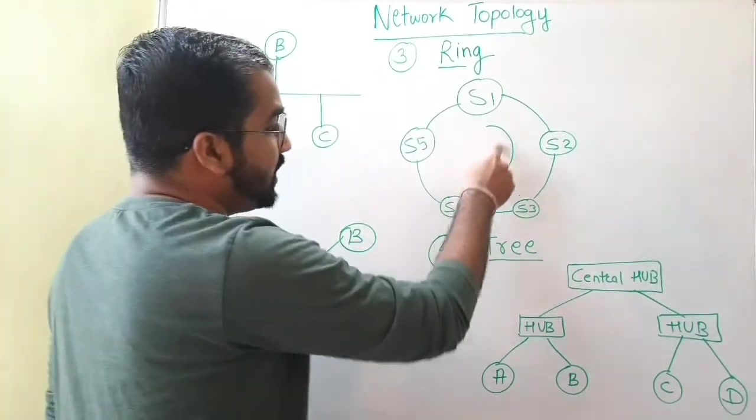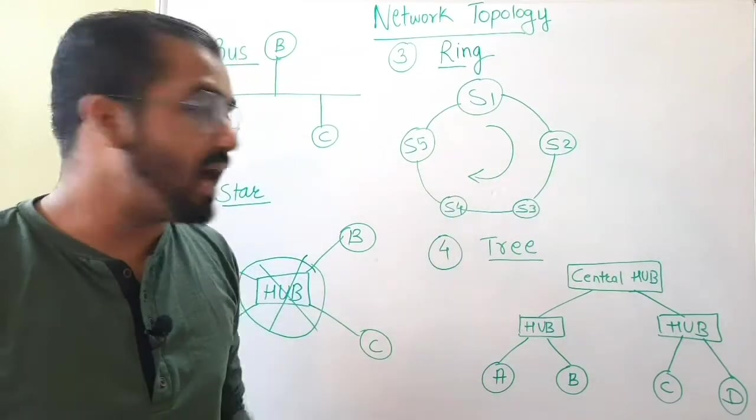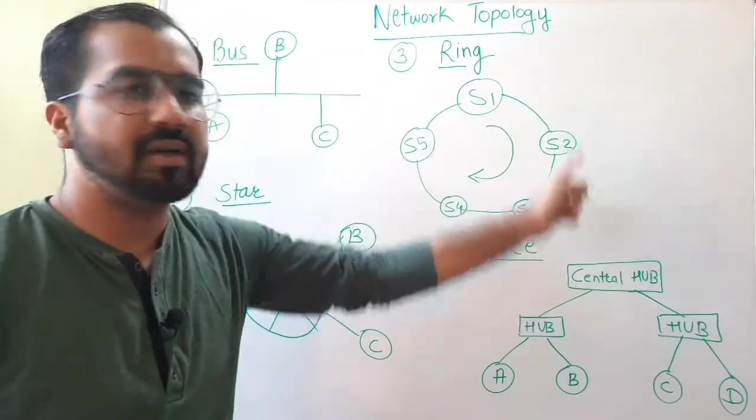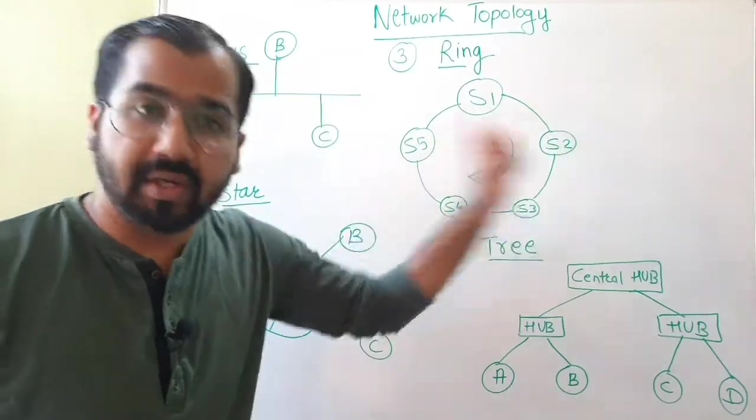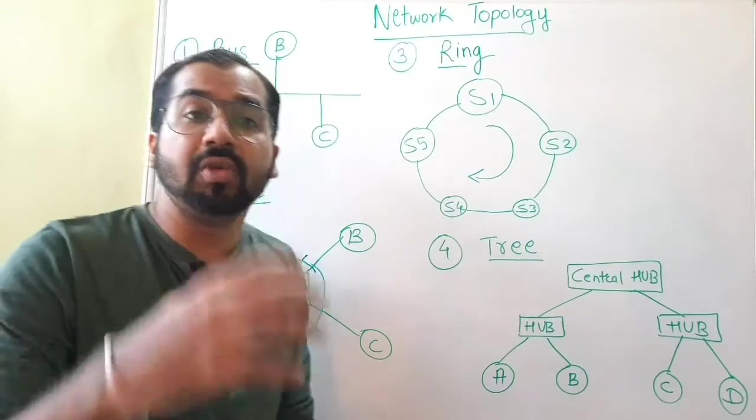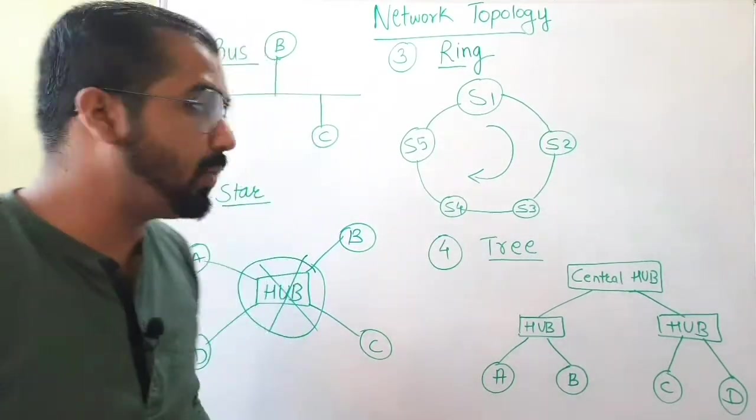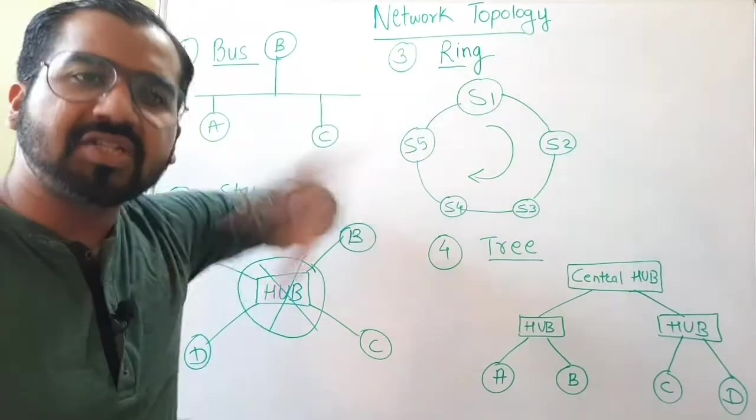And now what does this arrow mean? This arrow means that whatever the transmission of messages or data that has to be done, it is going to be in one direction. And in ring topology, you need tokens. You need tokens that are special packets in the ring topology.